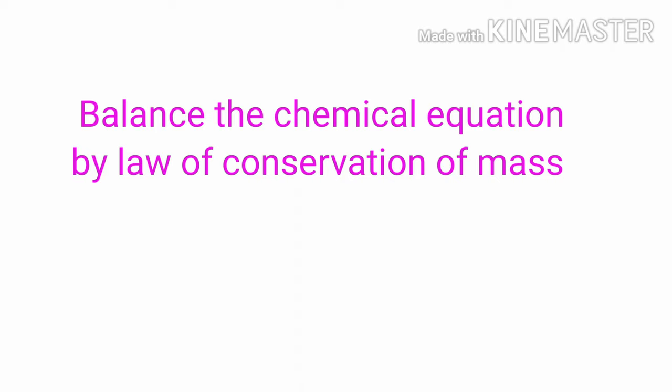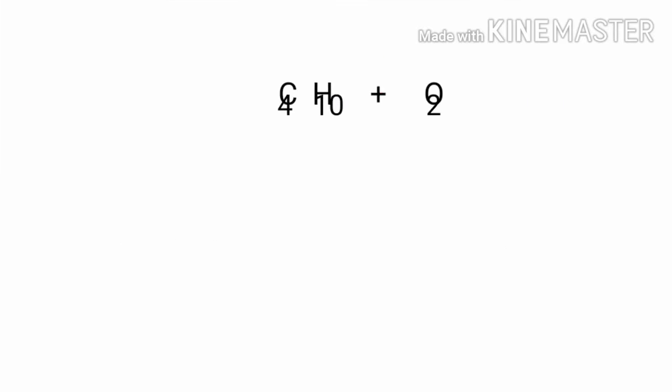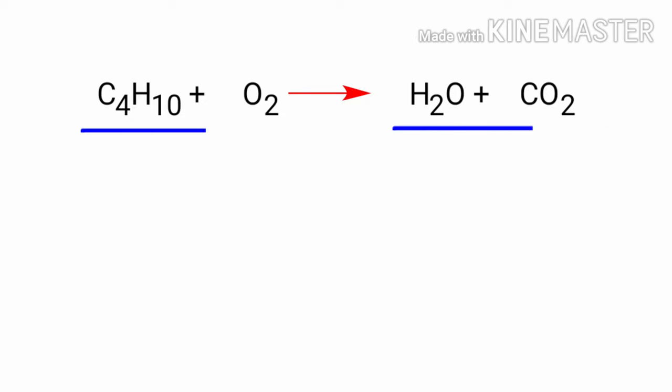Balance the chemical equation by law of conservation of mass. Butane plus oxygen gives us water plus carbon dioxide. In this equation, the reactants are butane and oxygen, and the products are water and carbon dioxide.